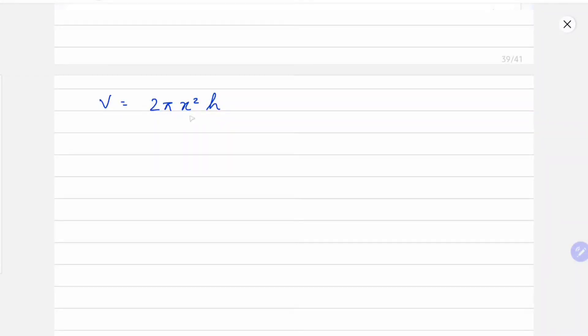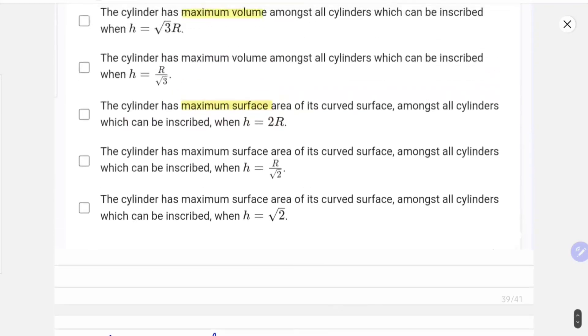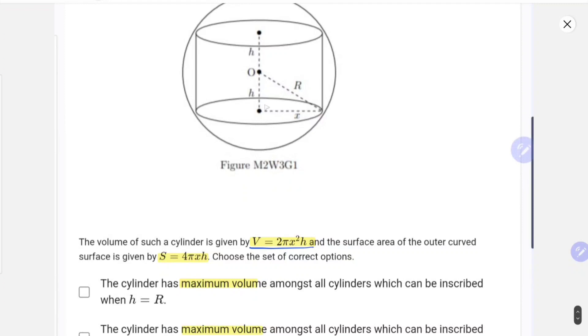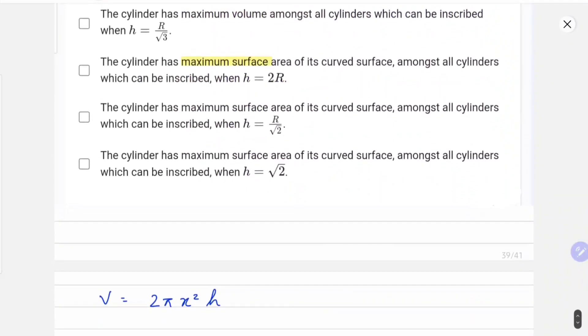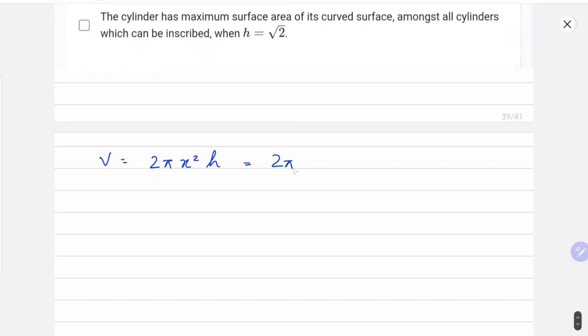First, there are two variables here, x and h, so we have to convert that. If you properly look at the image, you can clearly see this is a right-angle triangle. So we can write R² equals h² plus x², which gives us x² equals R² minus h², and x equals √(R² - h²). We can replace x² and write this as 2π(R² - h²)h, which comes out as 2πR²h minus 2πh³.